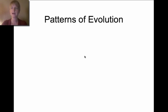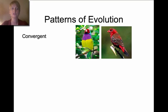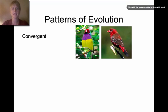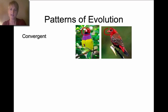Now let's talk about some patterns of evolution. The first is convergent evolution, where two species living in the same area — maybe eating the same type of berries — develop very similar traits. Looking at their beaks, they are very similar. Because they're sharing the same resources, their traits develop in a very similar manner.